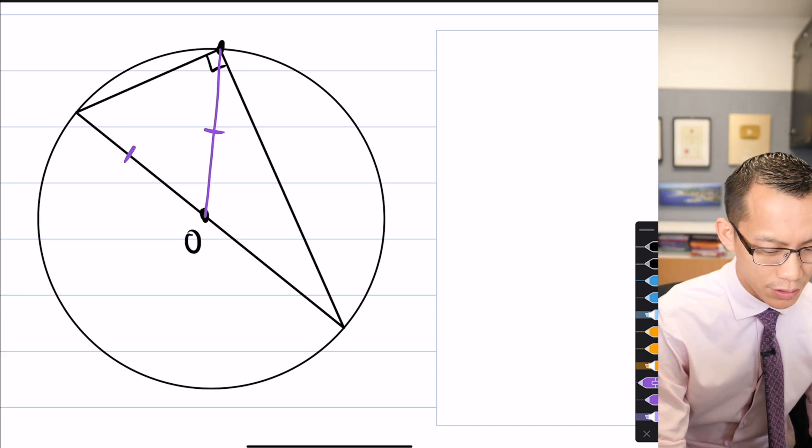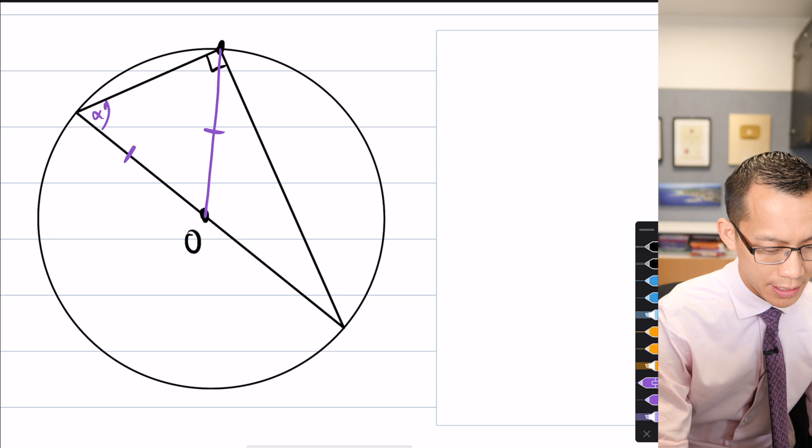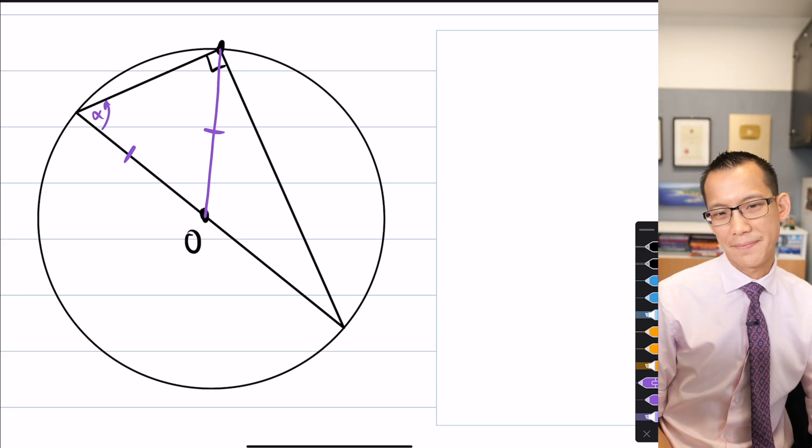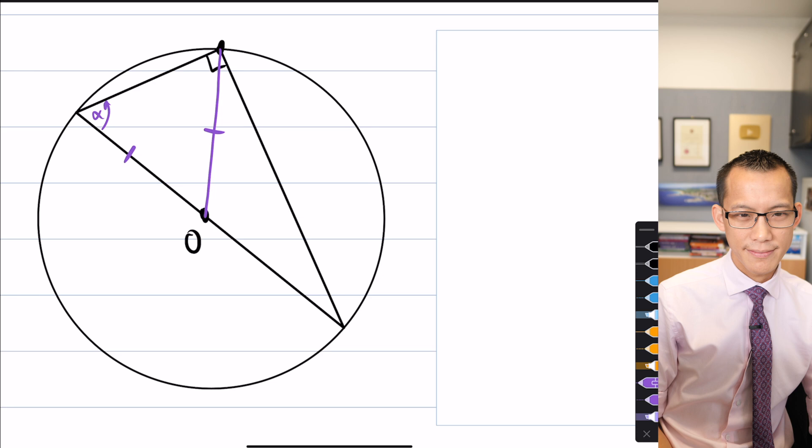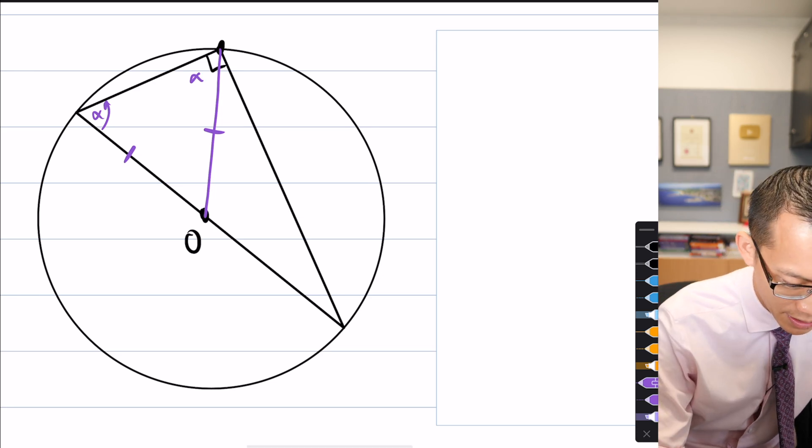So, if I looked at its angles, like if I called this alpha, for instance, there's another angle that's alpha. Which one is it? The one top right. Top right, fantastic. So, it's this one here, right?